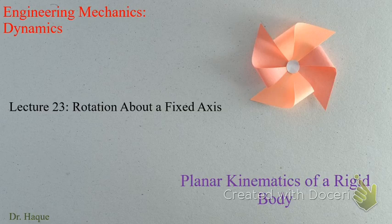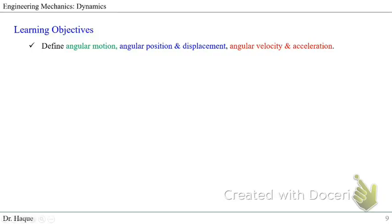Let's see what our learning objectives for today are: define angular motion, define angular position and angular displacement, define angular velocity and acceleration. We're going to clarify the understanding of angular motion, position, displacement, velocity, and acceleration. This will be Part A. Next class we'll derive the formulas we need to use for angular motion.